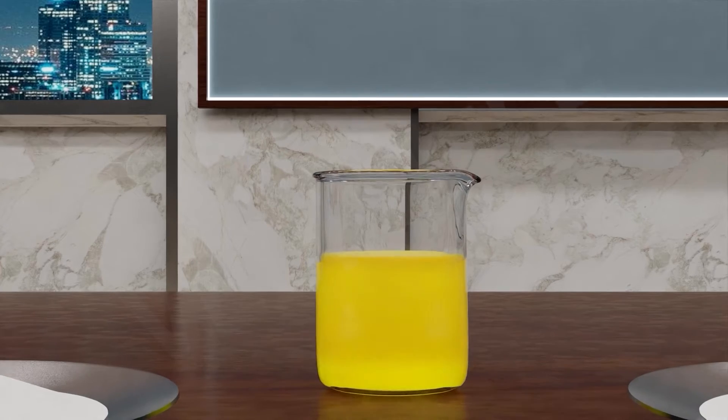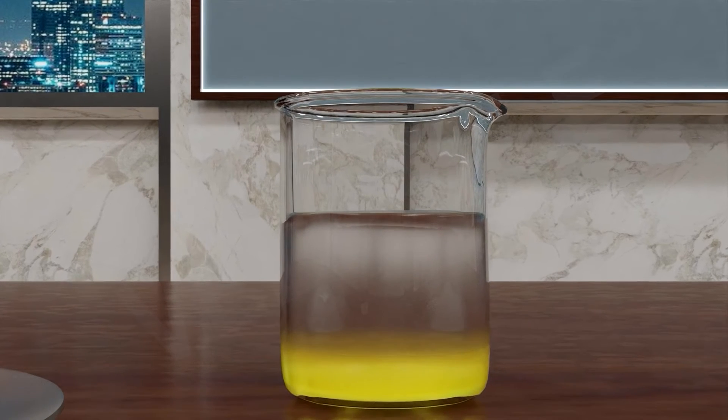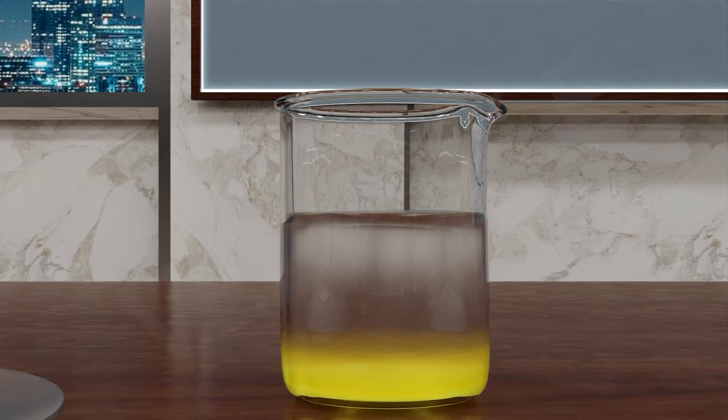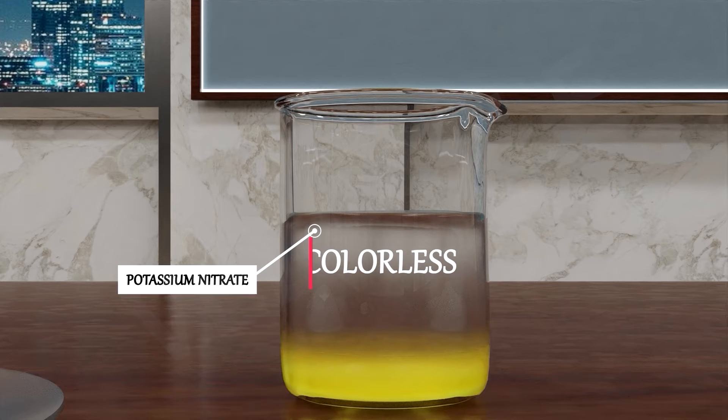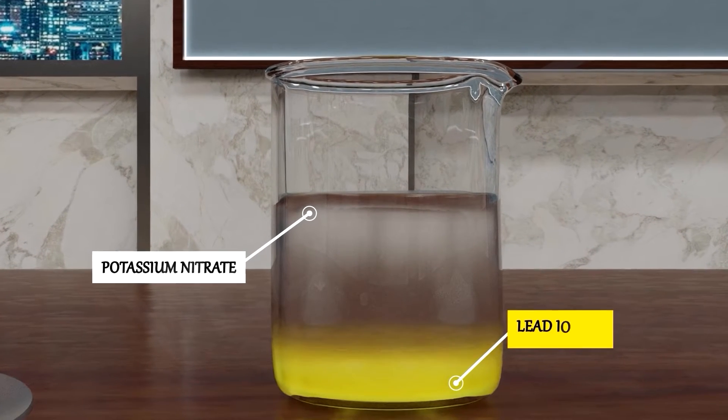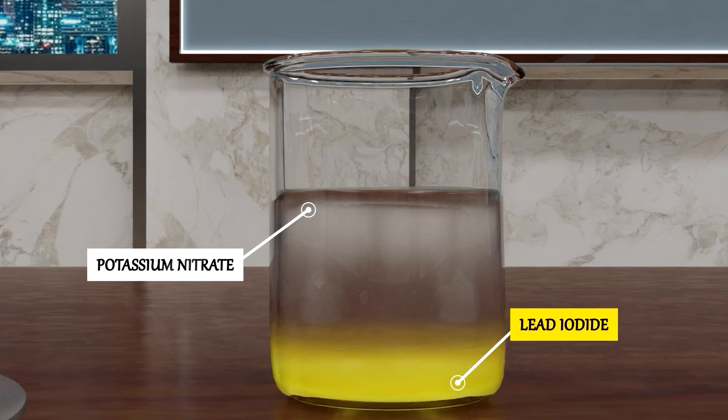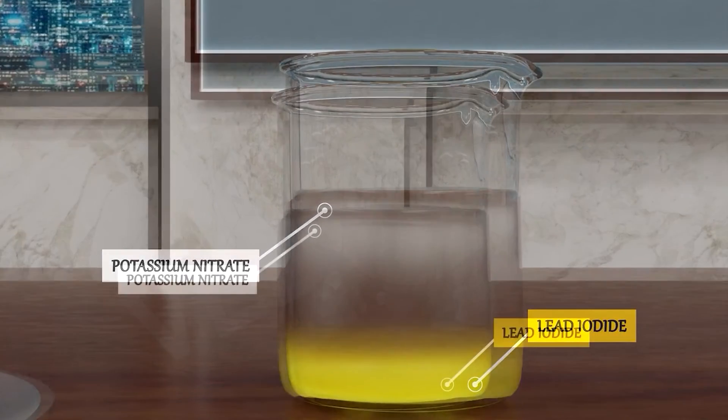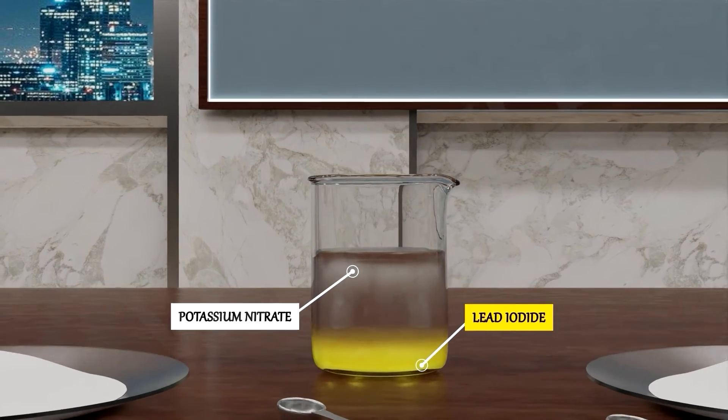Now let it be settled for some time. As we can see here, the upper side is colorless. This is potassium nitrate. But what is the color of the lower side? It is yellow. This is lead iodide, and it is insoluble in water.